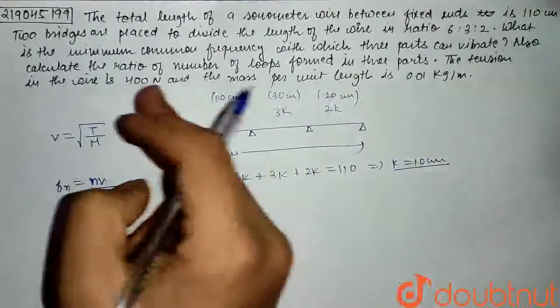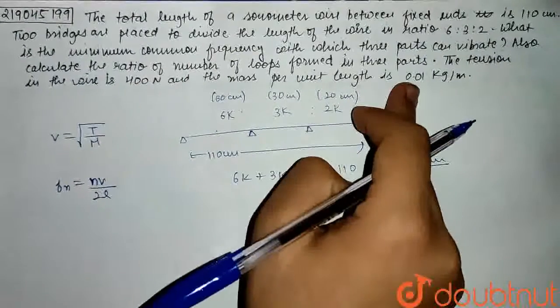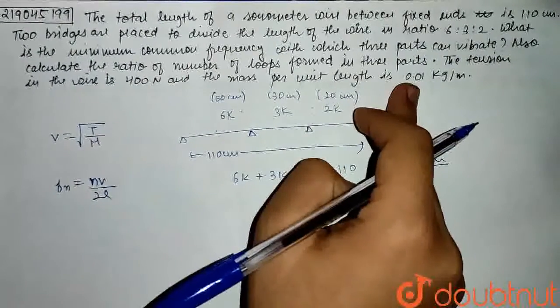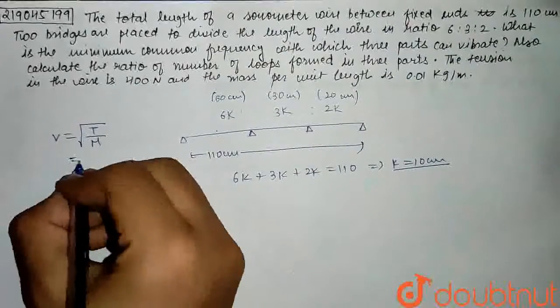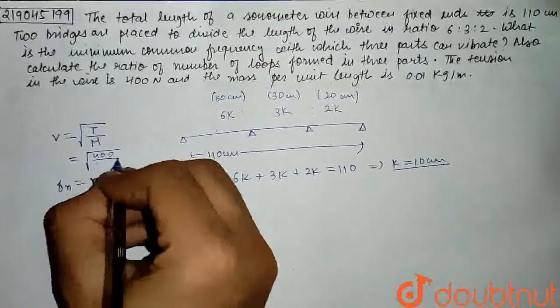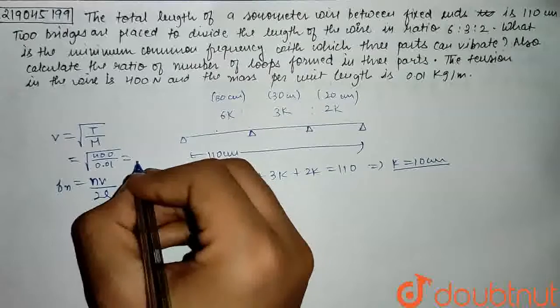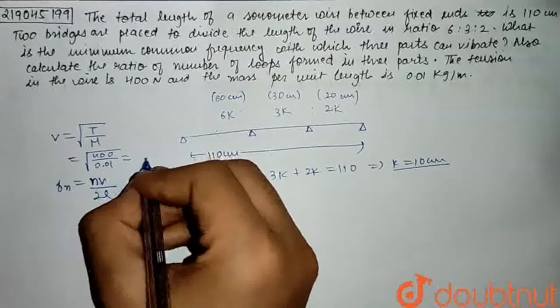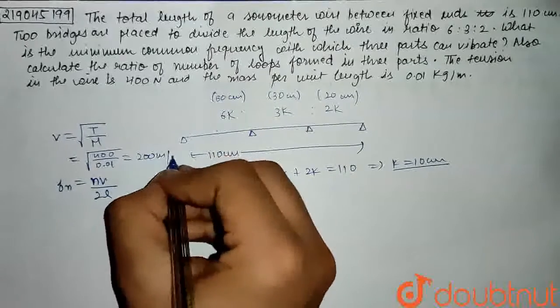The tension given in the question is 400 N and μ is 0.01 kg per meter. Substituting the values: V = √(400 / 0.01) = 200 meters per second. So our wave velocity is 200 m/s.